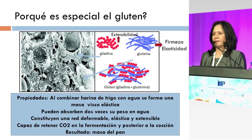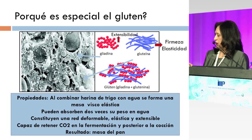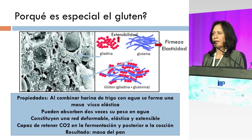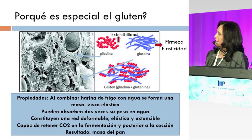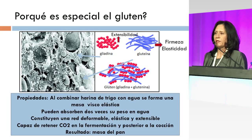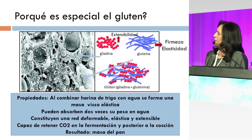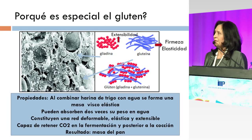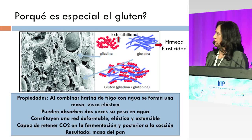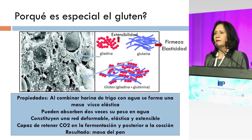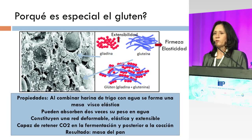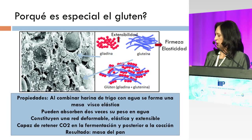¿Por qué es especial el gluten? Sabemos que a lo largo de la existencia del hombre, el pan ha sido una base de la alimentación de muchos individuos y el gluten es importante porque cuando la harina de trigo es mezclada con agua, estas dos proteínas —la gliadina y la glutenina— la gliadina es una proteína monomérica que le va a dar extensibilidad a la masa cuando se amasa, y la glutenina le va a dar firmeza y elasticidad. Al combinarse con agua pueden absorber dos veces su peso en agua y constituir una red deformable, elástica y extensible que es capaz de retener CO2 durante la fermentación y posteriormente durante la cocción para darnos como resultado la masa y posterior a la cocción el pan.